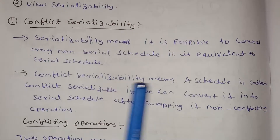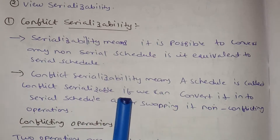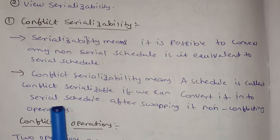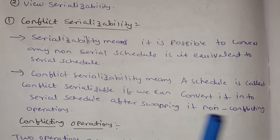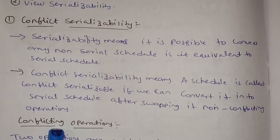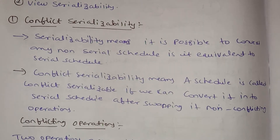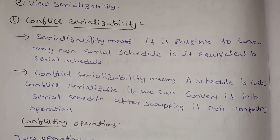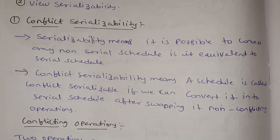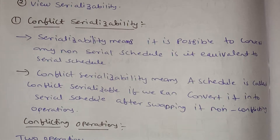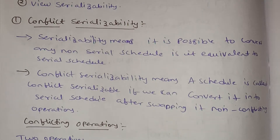Conflict serializability means a schedule is called conflict serializable if we can convert it into a serial schedule after swapping non-conflicting operations. If we can convert into a conflict serializable form, we can convert it into a serial schedule. Serial means one by one; non-serial means parallel.